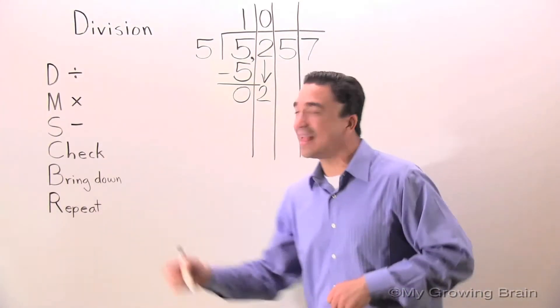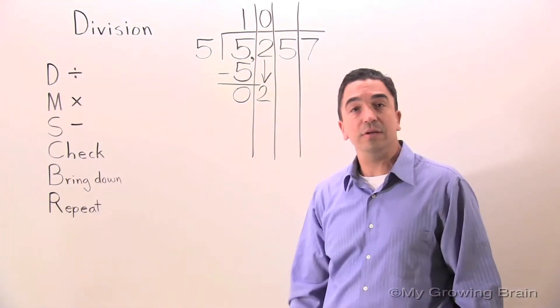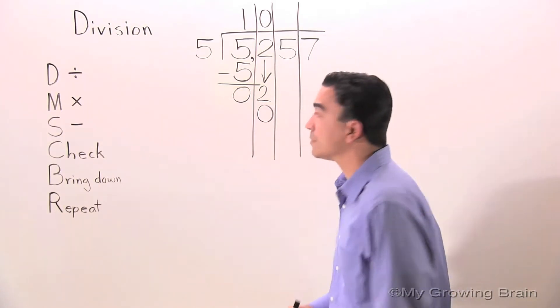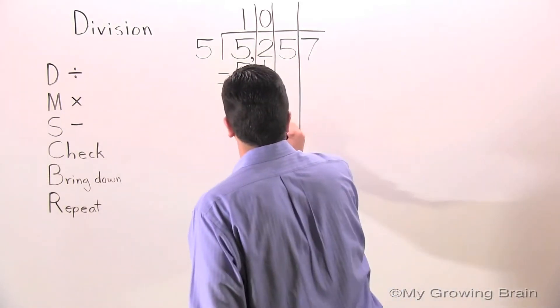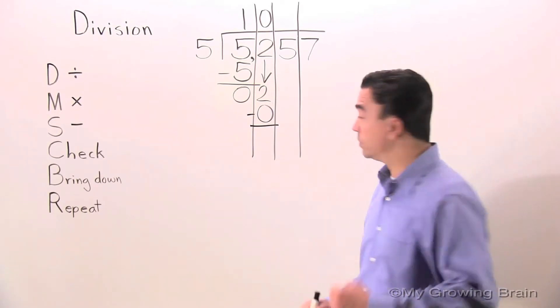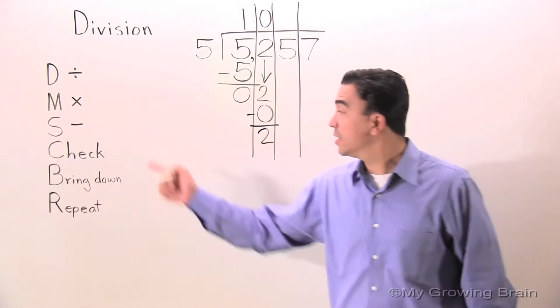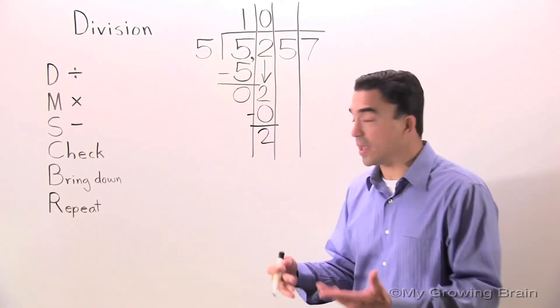Let's keep going. Next step, multiply: 5 times 0 is 0. Next step, subtract: 2 minus 0 is 2. Next step, check: 2 is less than 5. Therefore, we keep on going.